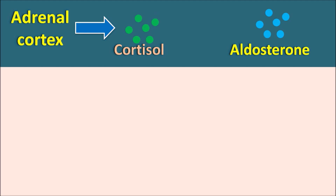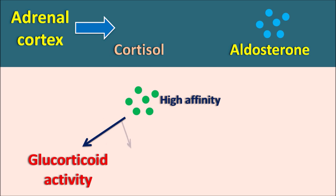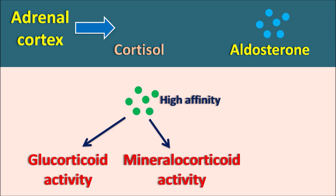Cortisol can enter into the cell and act on the corticosteroid receptors which have high affinity for cortisol, so cortisol mainly shows more activity compared with aldosterone. When cortisol acts on these receptors, it can produce two activities — glucocorticoid activity as well as mineralocorticoid activity. Compared with aldosterone, cortisol will have more affinity towards the corticosteroid receptors, and once it binds to these receptors, it can produce both glucocorticoid as well as mineralocorticoid activity.